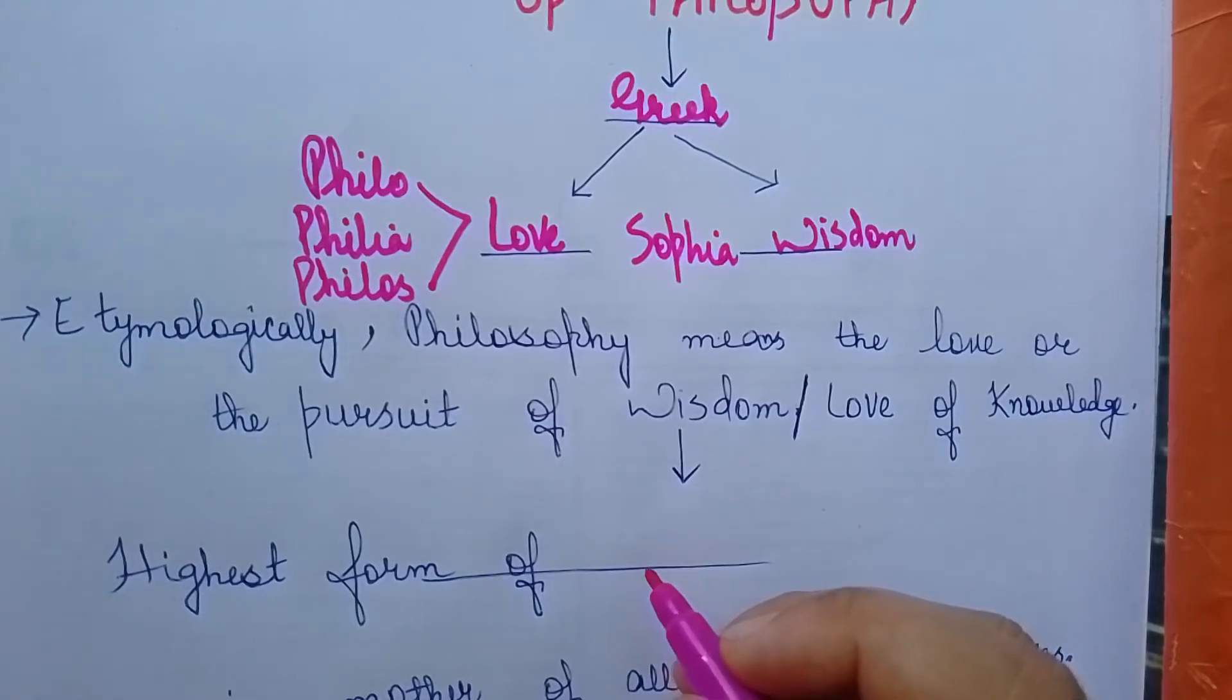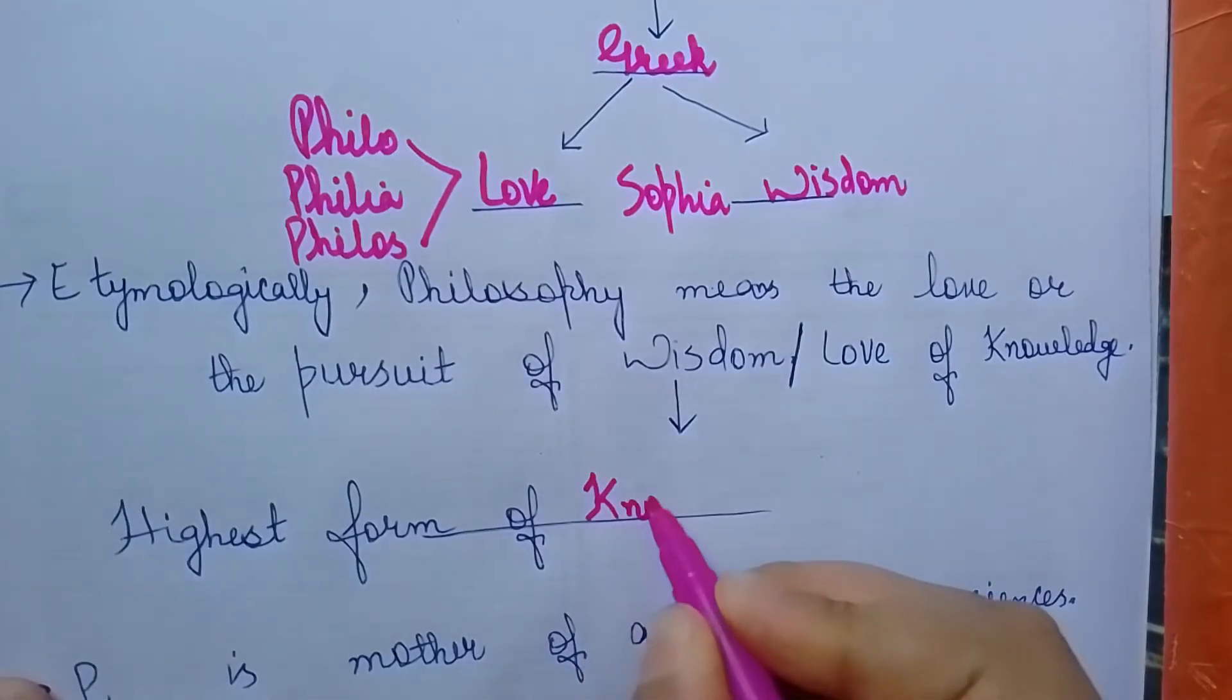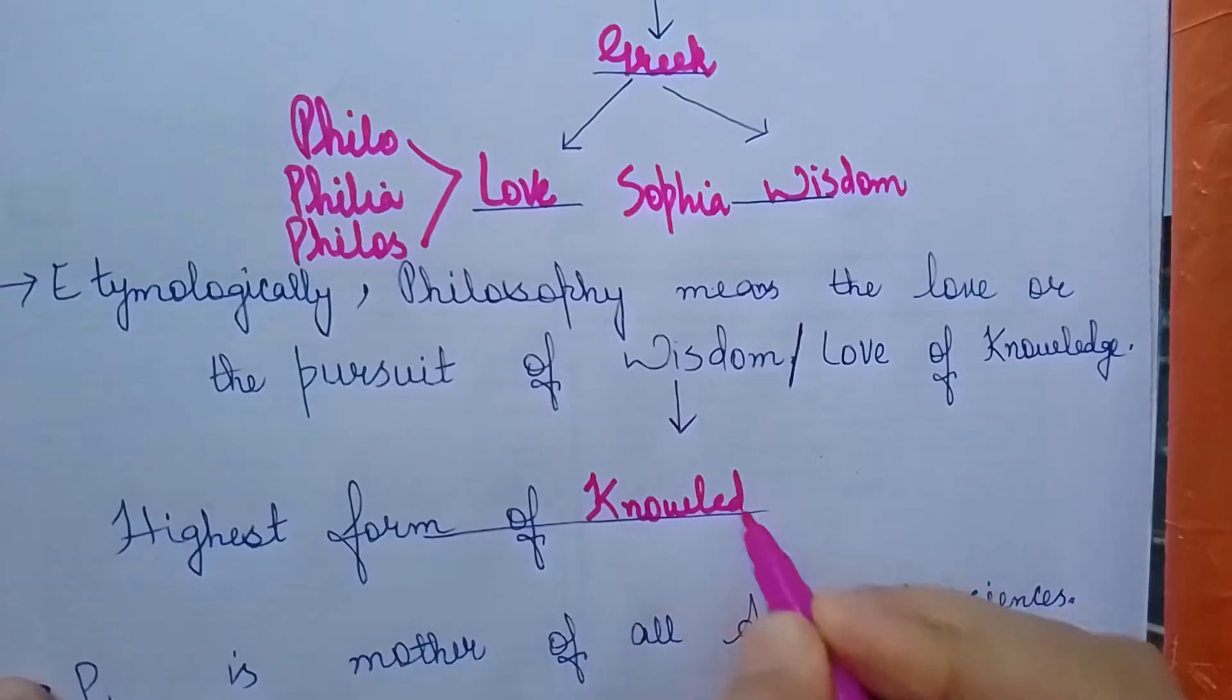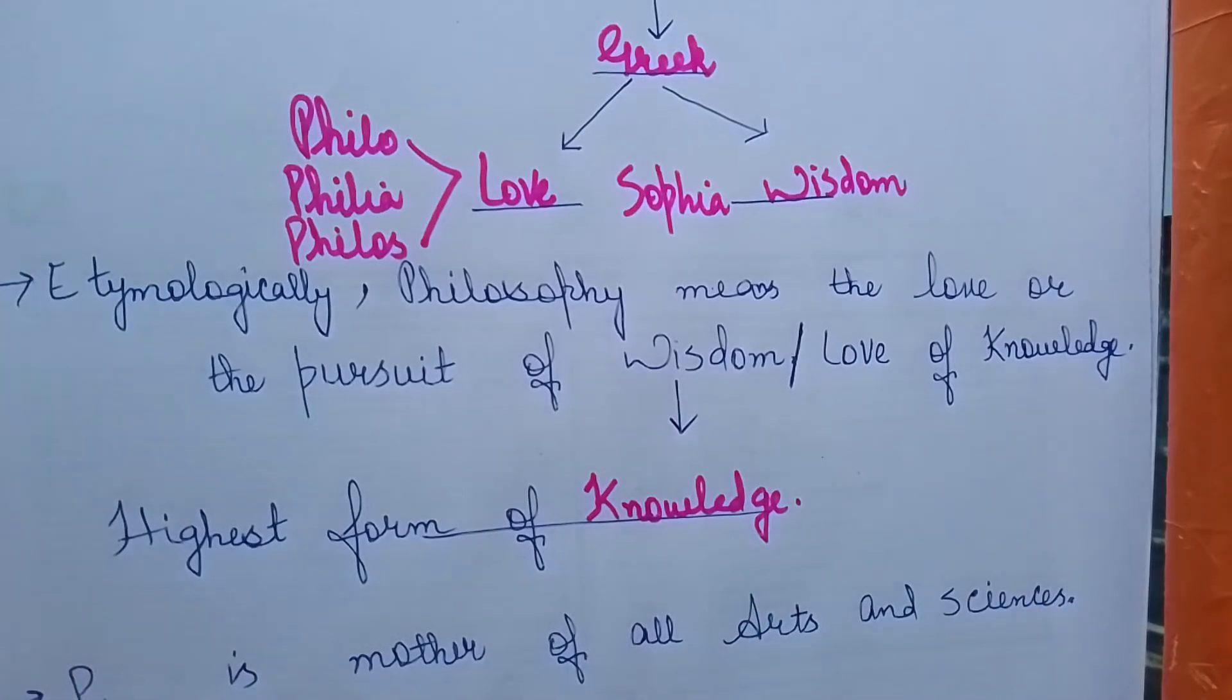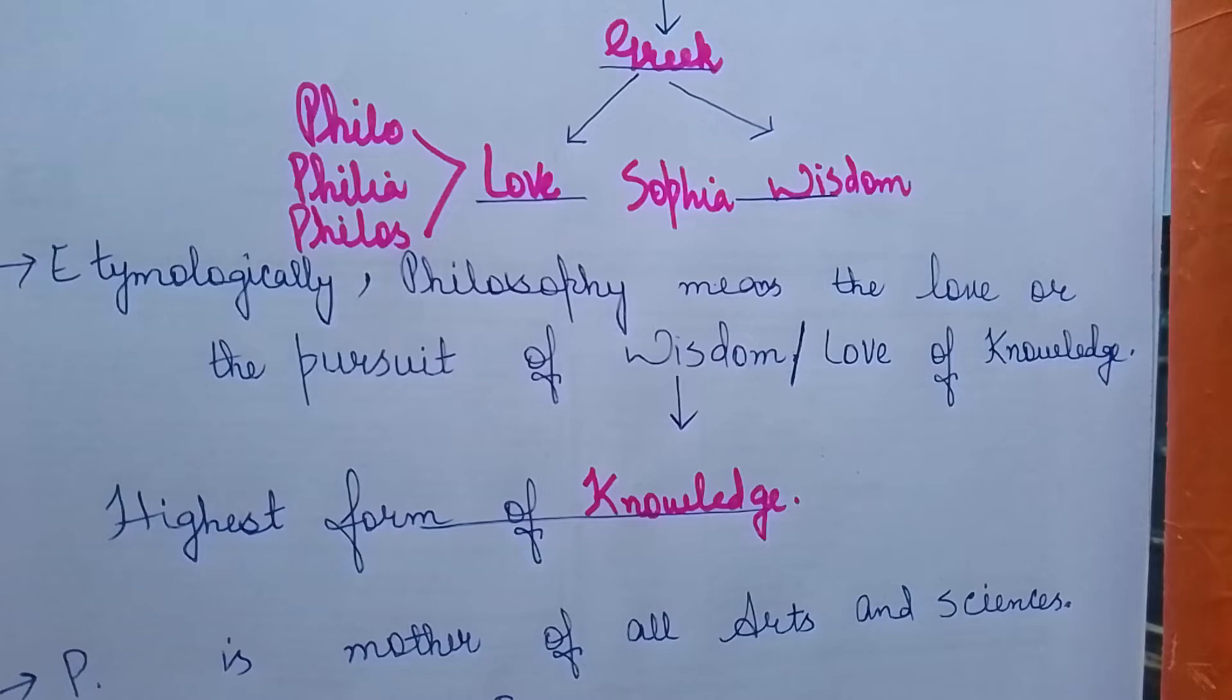Wisdom is the highest form of knowledge. Wisdom means extreme knowledge, meaning those who have very deep knowledge about something or all forms of knowledge. That is called wisdom.